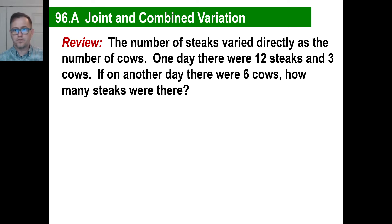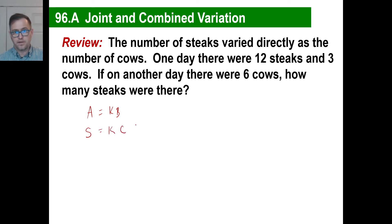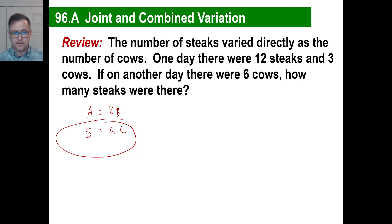So remember how we do direct variation? This is our basic equation for direct variation. The number of steaks varies directly as the number of cows — that's how we write the basic equation. One day there were 12 steaks and 3 cows, so that's 12 equals k times 3. So k is equal to 4.